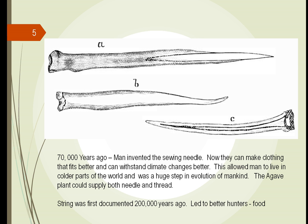Humans learned years before the sewing needle that they could make string by taking fibers from plants and folding or twisting them together to make string or rope. Combining the two together, they could make clothing. And that clothing allowed them to explore different parts of the world — they could now go further north for hunting.